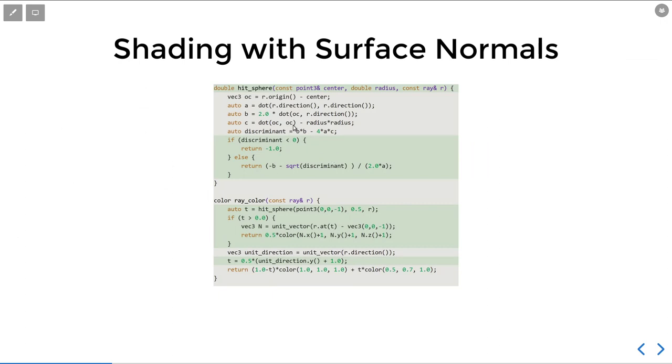Then for the hit sphere function, since we actually need to know where the hit point is, we need to calculate the root. And then for the ray color function, we just calculate the normal vector and then scale it into a color from 0 to 1 so we can visualize it easily.